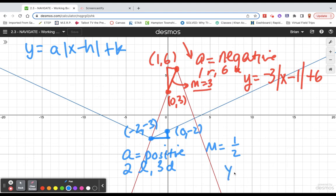Putting it all together to create my absolute value function: a half out front as the slope indicator, positive because our v is facing the correct direction, x plus 2 for the move to the left, minus 3 for the move down.